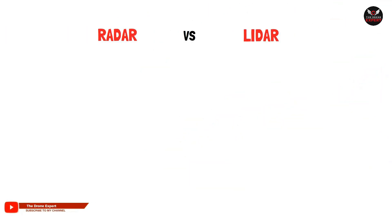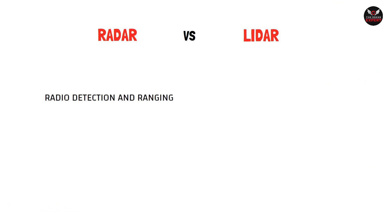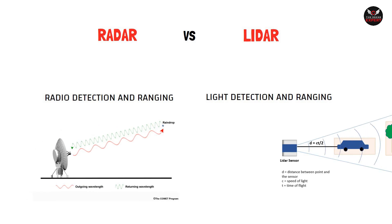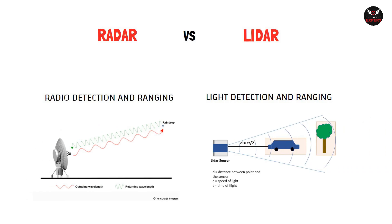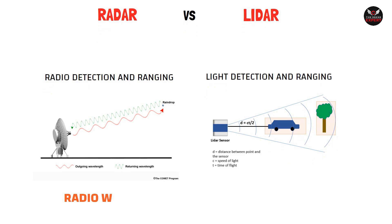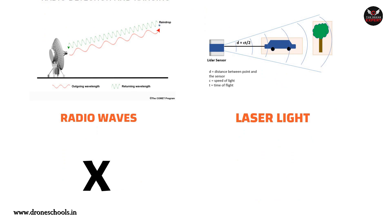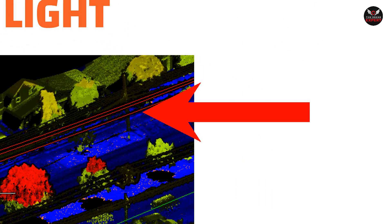Both LiDAR and photogrammetry have their own advantages and disadvantages, which we will explore in the upcoming video. You might be wondering — LiDAR works like radar, but there is a key difference. While radar uses radio waves, LiDAR uses laser light to find the distance to an object. One major advantage of using LiDAR in mapping is its ability to identify small objects like power lines, which is not possible with radar.